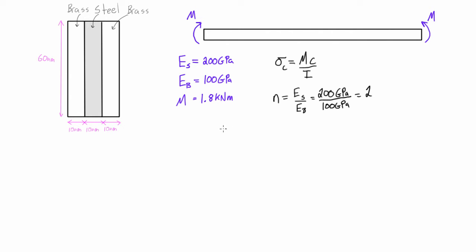So let's go and draw our transformed cross-section. So what we've done here is we've converted the steel section with its modulus of elasticity of 200 gigapascals into an equivalent area of modulus of elasticity of 100 gigapascals. So all we did is we multiply the area by 2 and we increase that area in a direction that's parallel to the neutral axis of the composite cross-section.